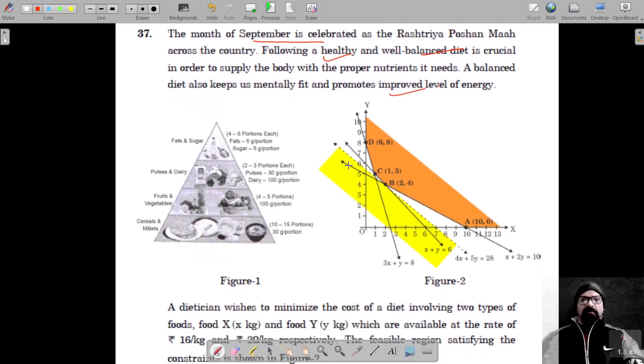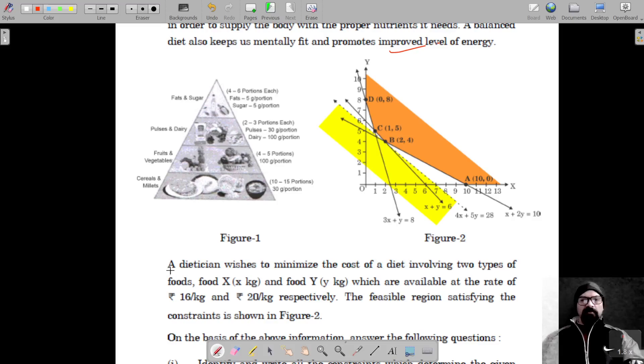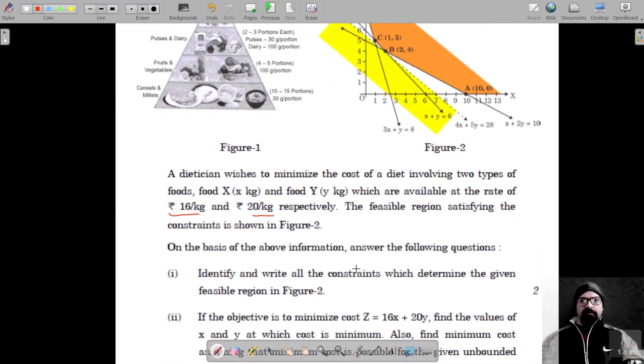Now, the dietitian wishes to minimize the cost of a diet involving two types of foods, X and Y, which are available at the rate of Rs 16 per kg and Rs 20 per kg respectively. The feasible region satisfying the constraints is given, and on the basis of the above information we have to answer the following questions.